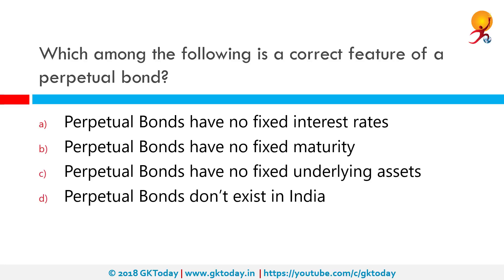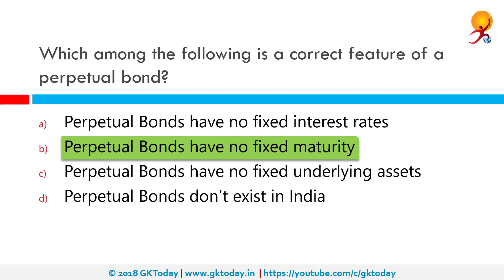Which among the following is a correct feature of the perpetual bond? Perpetual bonds do not have any maturity dates and hence are perpetual. Since they never retire, such debt instruments give the issuers the comfort that equity capital offers in their capital base.